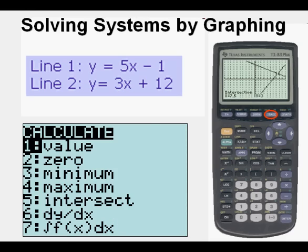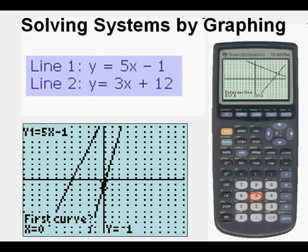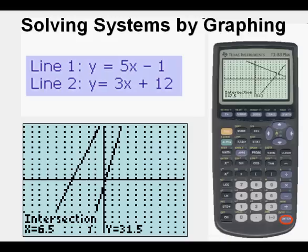We are going to press second, trace, 5, enter, enter, enter. And we get our intersection of x equals 6.5, y equals 31.5.